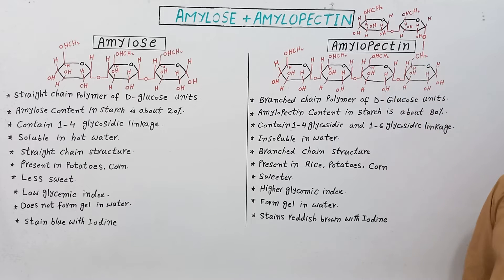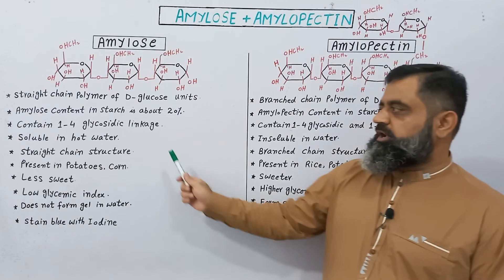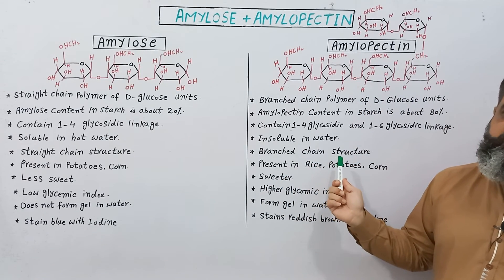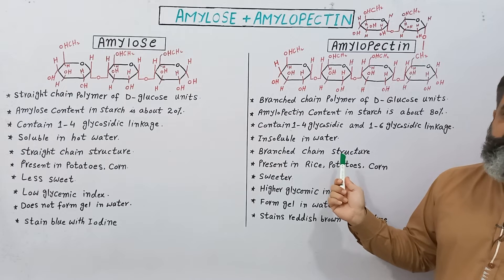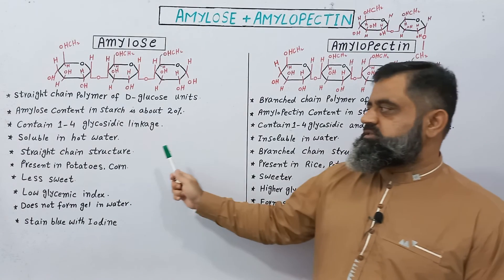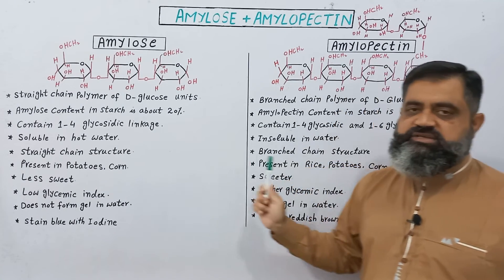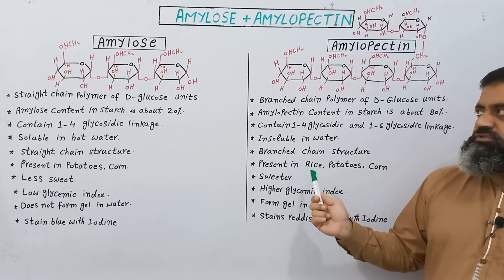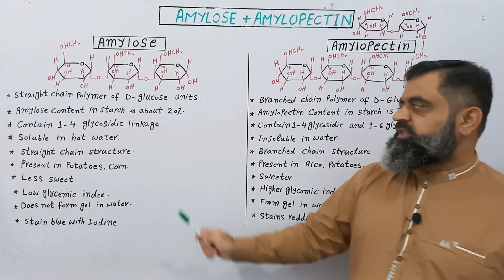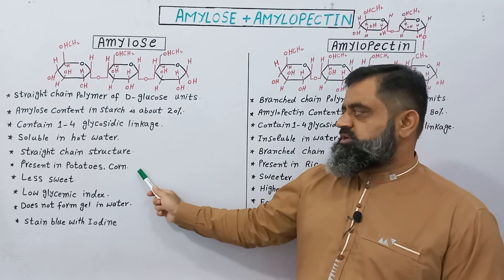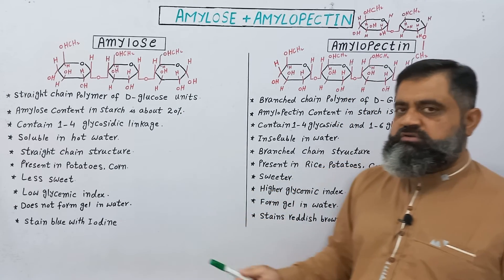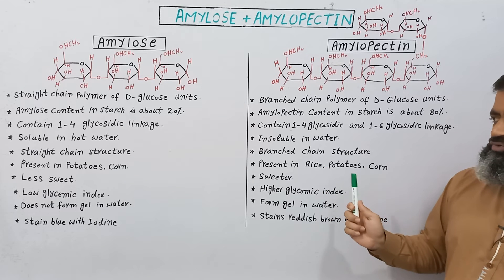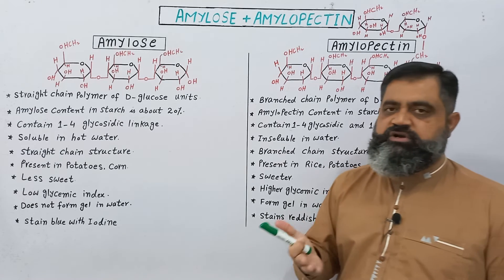Amylose starches are soluble in hot water, while amylopectin starches are not soluble in water. Amylose has a straight chain structure, whereas amylopectin has a branched chain structure. Amylose starches are usually present in potatoes and corn, while amylopectin starches are also present in rice, potatoes, and corn. Different types of starches contain different percentage content of amylose and amylopectin.